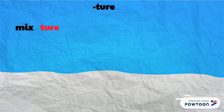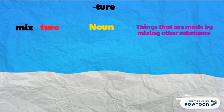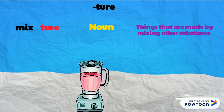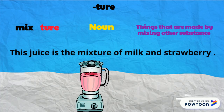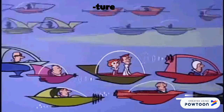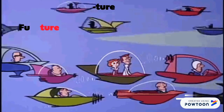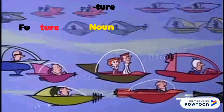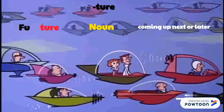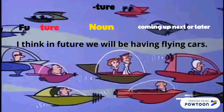Mixture. 'Mixture' is a noun which means things that are made by mixing other substances. This juice is the mixture of milk and strawberry. Future. 'Future' is a noun which means coming up next or later. I think in the future we will be having flying cars.